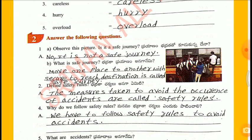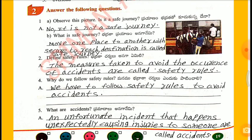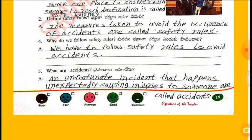What is safe journey? Moving from one place to another with security to reach the destination is called a safe journey. Define safety rules: The measures taken to avoid the occurrence of accidents are called safety rules. Why do we follow safety rules? We have to follow safety rules to avoid accidents. What are accidents? An unfortunate incident that happens unexpectedly causing injuries to someone are called accidents.